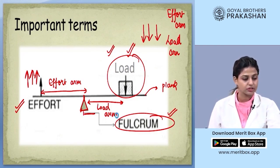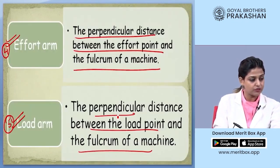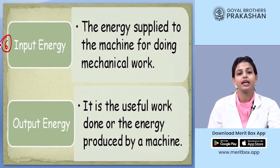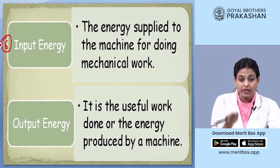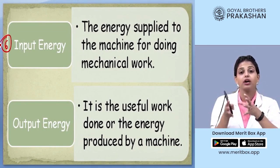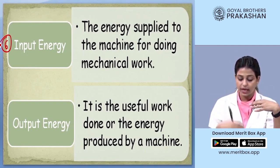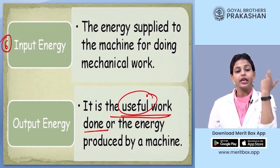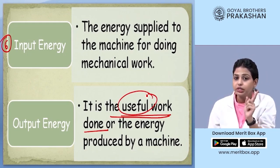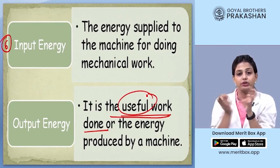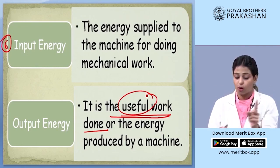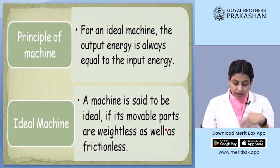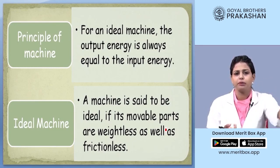Let's move on to some more definitions. Definition number 6: input energy. The energy supplied to the machine for doing mechanical work is defined as input energy — how much energy I am putting into the machine to perform a particular task. On the other hand, the output energy is the useful work done. The energy I put into the machine is my input energy, and the machine converts that input energy into some output. The output energy is the useful amount of energy produced by the machine.